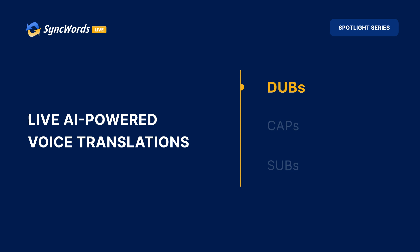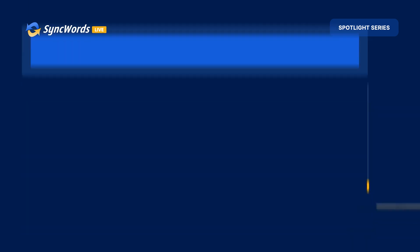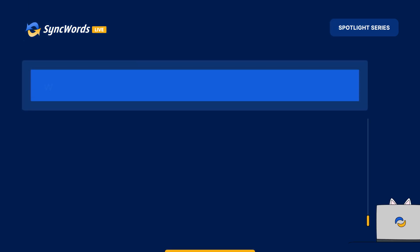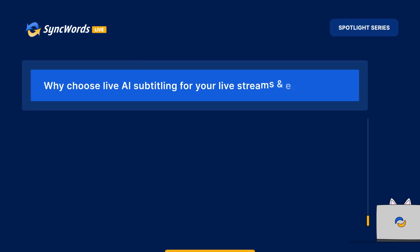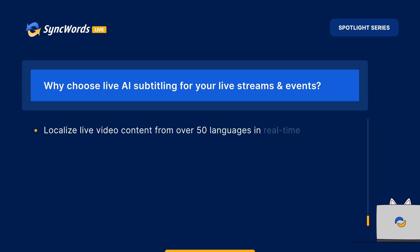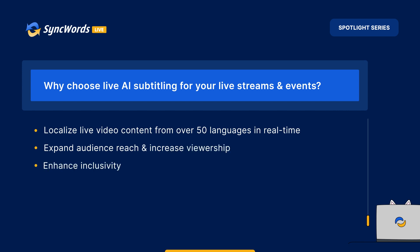Let's start with our state-of-the-art real-time AI subtitling. Why choose AI subtitling for your live streams and events? To localize live video content from over 50 languages in real time. To expand audience reach and increase viewership. To enhance inclusivity and accessibility. To significantly optimize costs and save time.